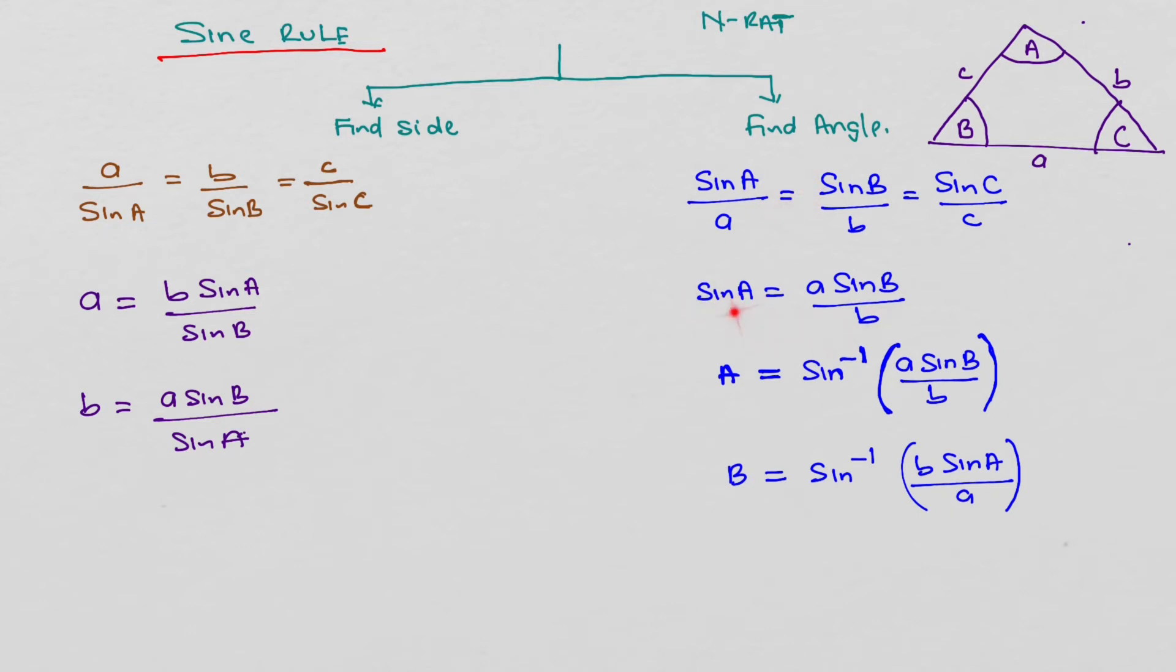And therefore, we divide both sides by a, A will be sine to the power minus 1, a sine B over b.